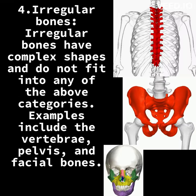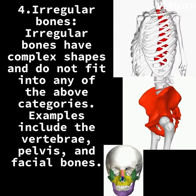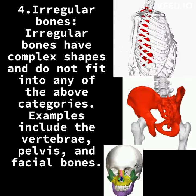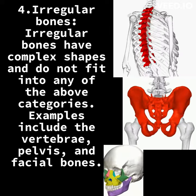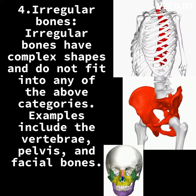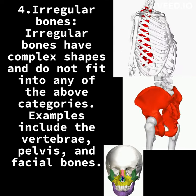4. Irregular bones. Irregular bones have complex shapes and do not fit into any of the above categories. Examples include the vertebrae, pelvis, and facial bones.